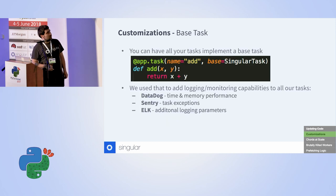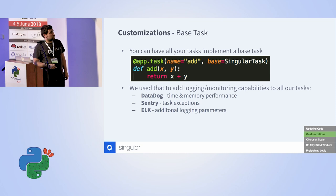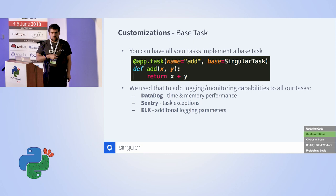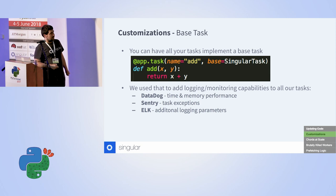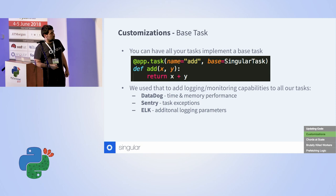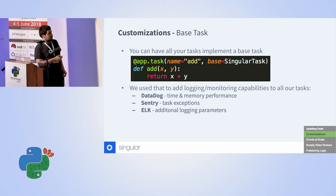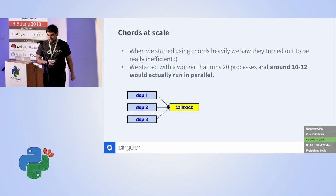Finally, we also defined a base Singular task — this is pretty standard in Celery but good to know. We used it mostly to define monitoring and logging capabilities common to all tasks: making sure time and memory performance is recorded for each task, reporting exceptions to Celery, and adding more parameters to Kibana. This was really easy to do with a base task, and that pretty much covers the customization part.